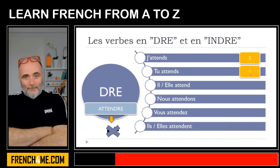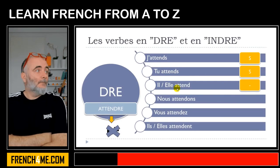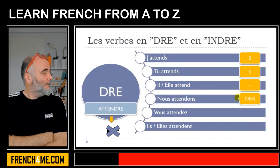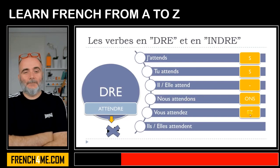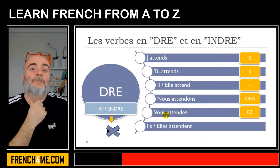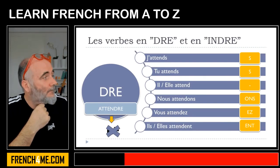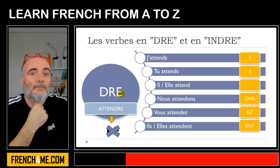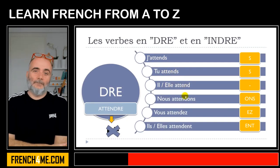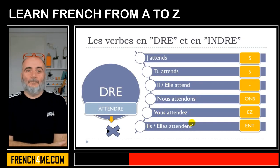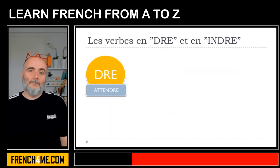For il/elle, you don't add anything — il attend. For nous, the classic ending is ONS — nous attendons. For vous, you add EZ — vous attendez. And for ils/elles, you add ENT — ils attendent, elles attendent. So that's how verbs ending with DRE are conjugated.